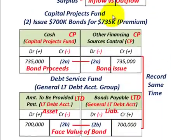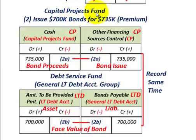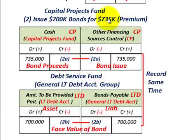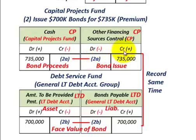Now let's move into the capital projects fund itself and look at issuing these bonds at a premium. For the capital projects fund, we're going to actually receive $735,000 for bonds with a face value of $700,000 — so there's a $35,000 premium. We'll trace this premium through our different accounts. We debit cash in the capital projects fund for $735,000 for the bond proceeds, and credit the other financing sources control account for $735,000.